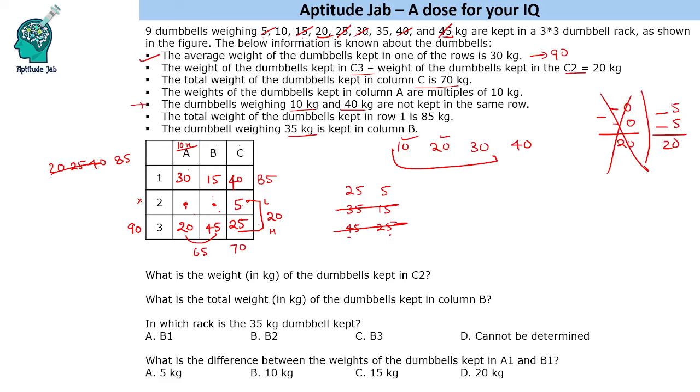So this is done: 45, 20. Then we are left with two more weights, that is 10 and 35. So this will be 35 and this is going to be 10 kgs. So this is how we complete the matrix of putting all the nine values.